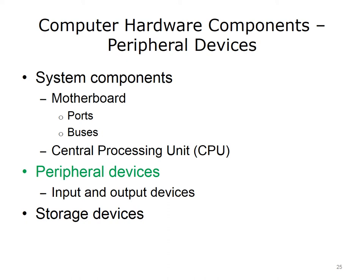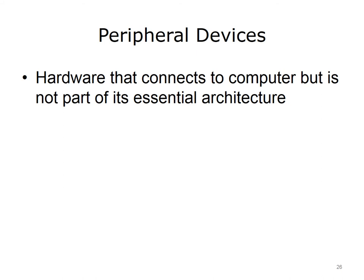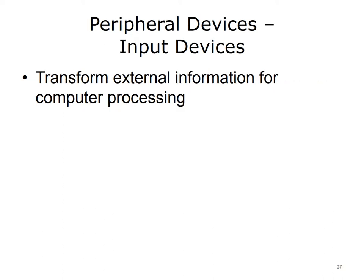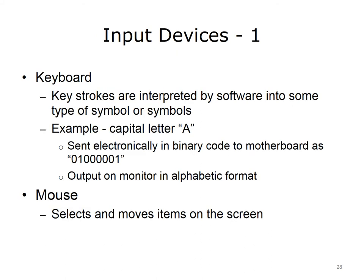Let's move on to peripheral computer devices. A peripheral computer device is input or output hardware that connects to the computer but is not part of its essential architecture and is not installed inside the computer case. Input devices transform external information for computer processing. A keyboard is an input device — its keystrokes are interpreted by software as symbols. For example, the capital letter A, when typed into a word processing document, is sent electronically from the keyboard in binary code to the motherboard, then output to the monitor.